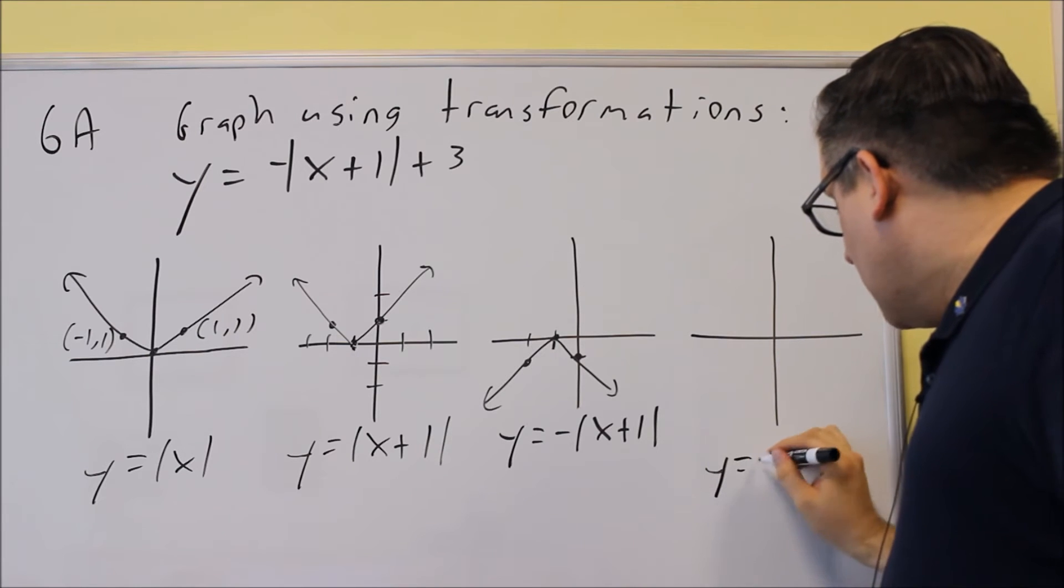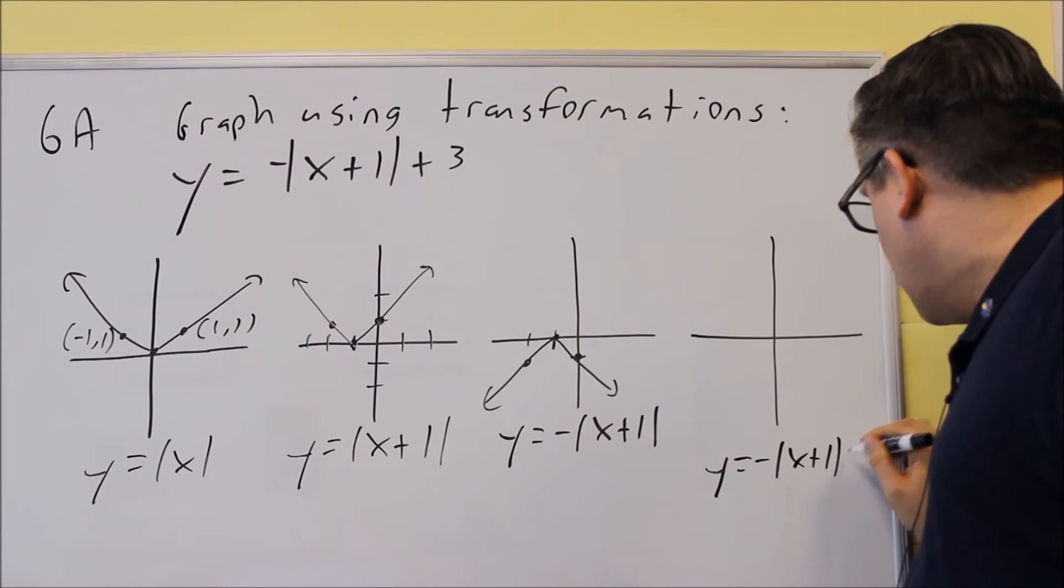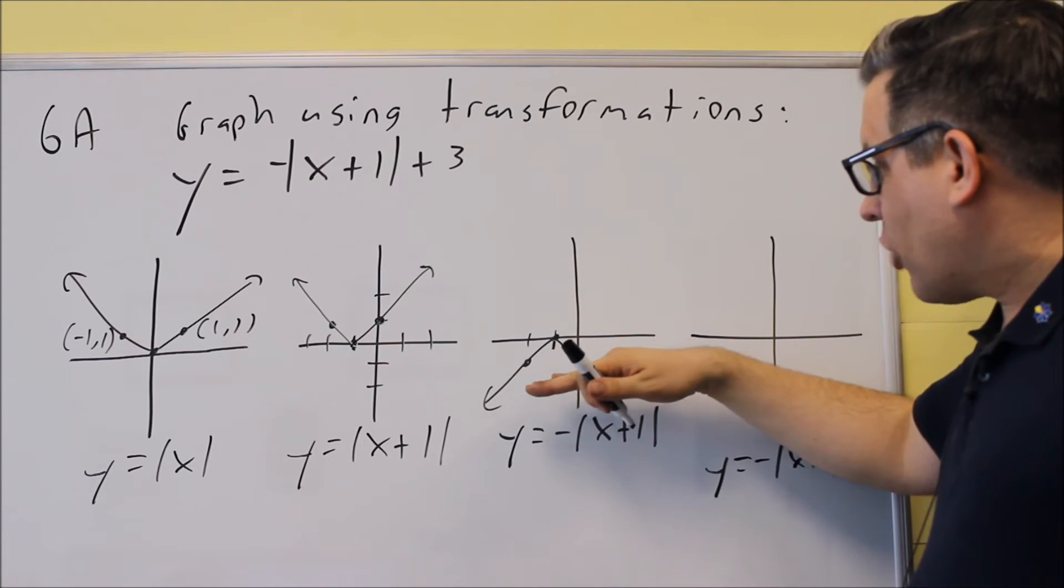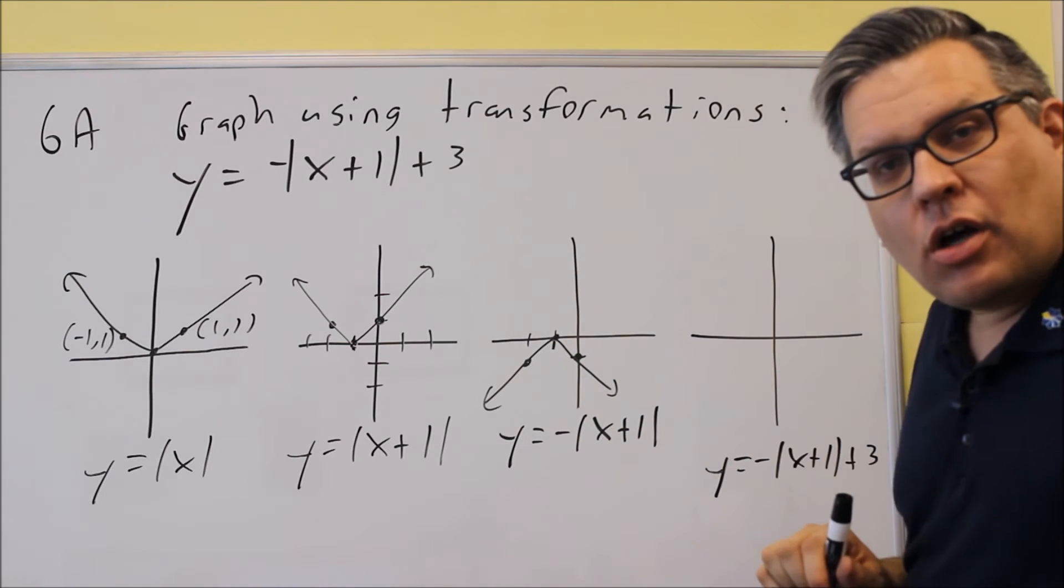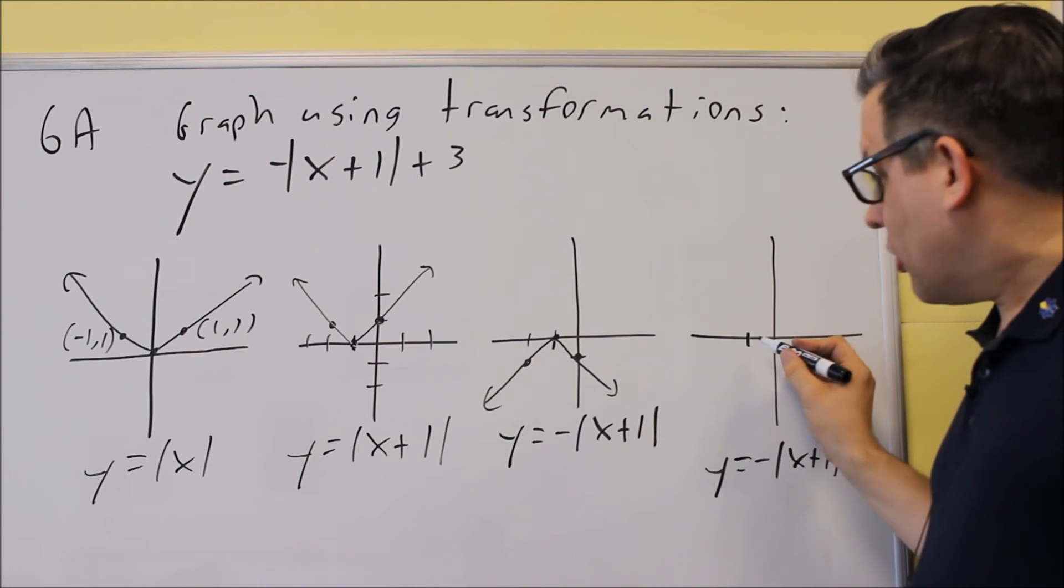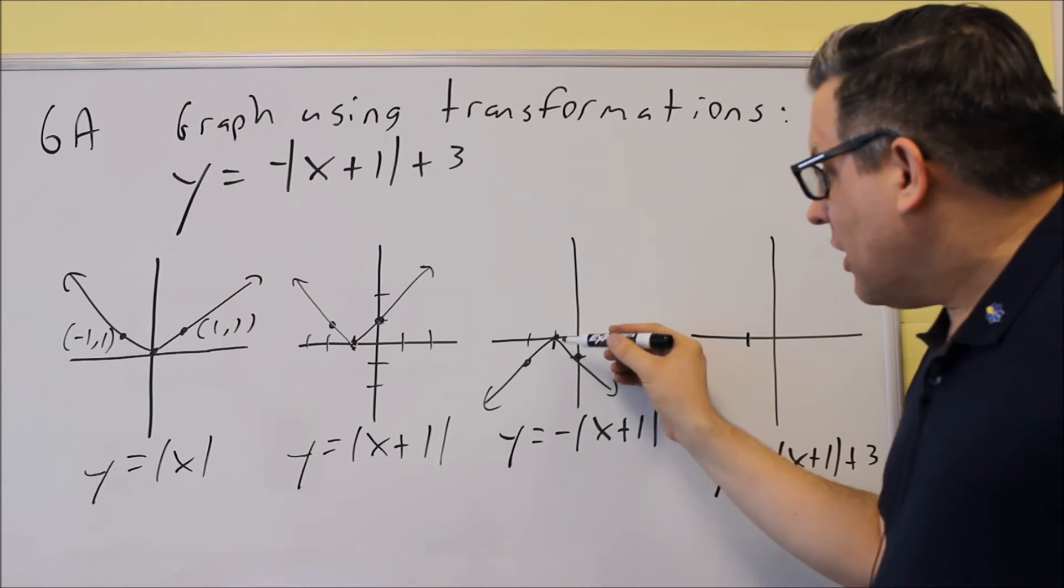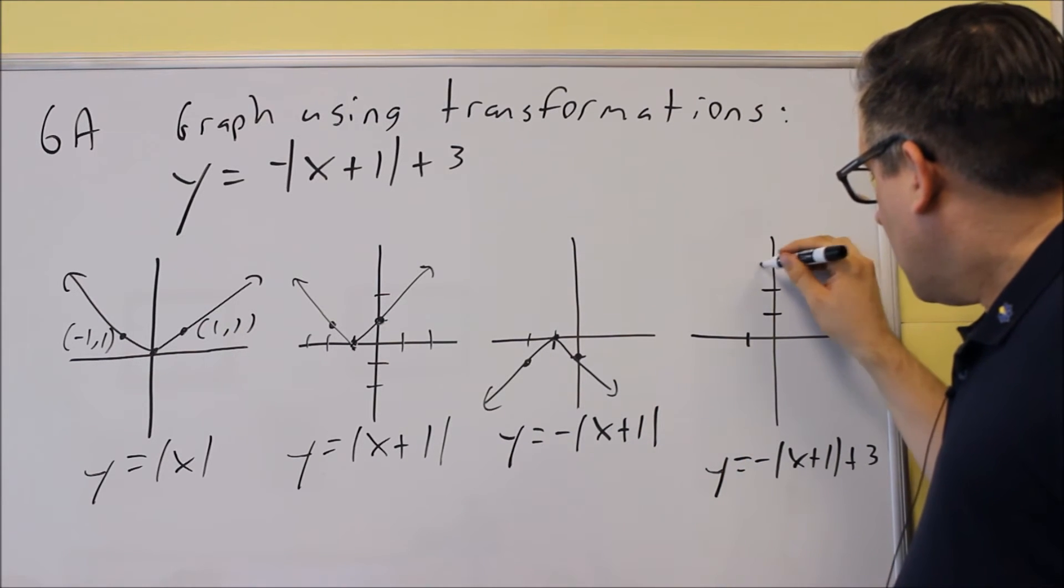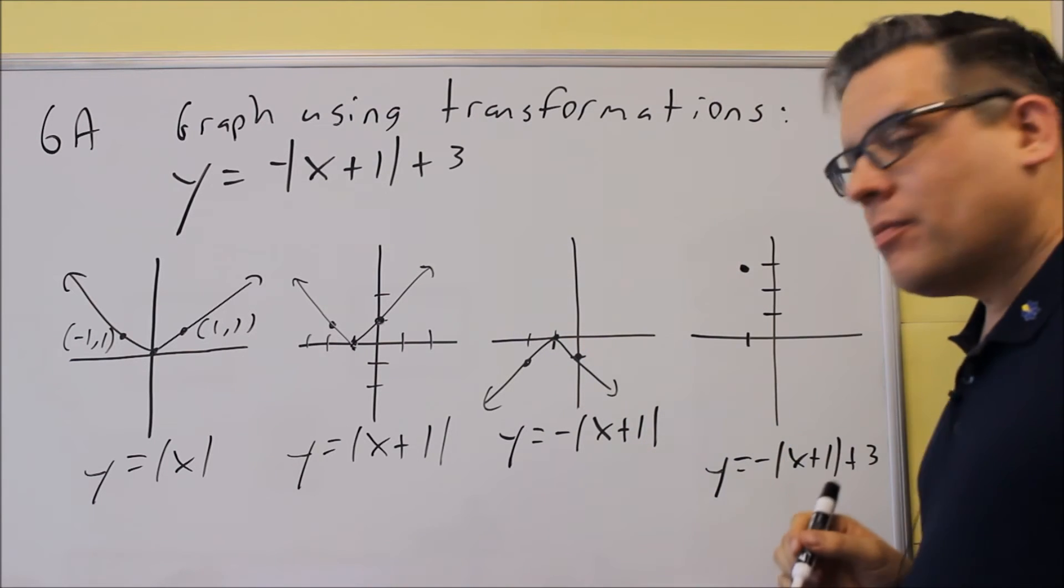The final one is going to be negative absolute value x plus 1, but then I'm going to add 3 to it. So now it's going to take this whole graph and shift the whole thing up 3 units. I didn't move it left or right, it's still going to be here at negative 1. But everything you see here is going to move up 3. So now, where it was on the x-axis, it's now going to be up here at 3.